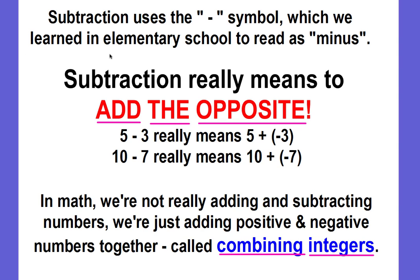Subtraction also uses this symbol, and we learned in elementary school to read it as minus. But subtraction really means to add the opposite. Your elementary teachers couldn't tell you that because you didn't know what opposites were — you were just learning about whole numbers. So if you have 5 minus 3, this really means 5 plus the opposite of 3, which is negative 3. So it really means 5 plus negative 3.